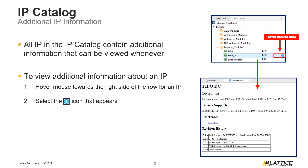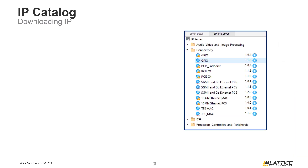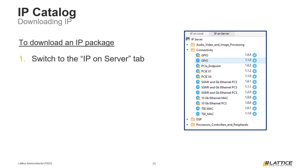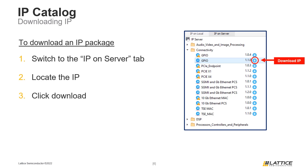Now that we've covered some basic information about the IP Catalog's tabs, we're going to discuss how users can add IP to use in their projects. One of the ways that IP can be added for use in Radiant projects is to download an IP package from Lattice's IP server. The process for downloading an IP package is fairly simple: switch to the IP on Server tab of the IP Catalog, locate the IP you want to download, and click the blue download icon, as can be seen in the figure on the slide.